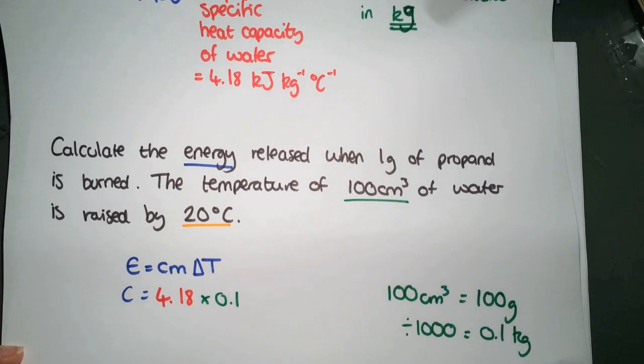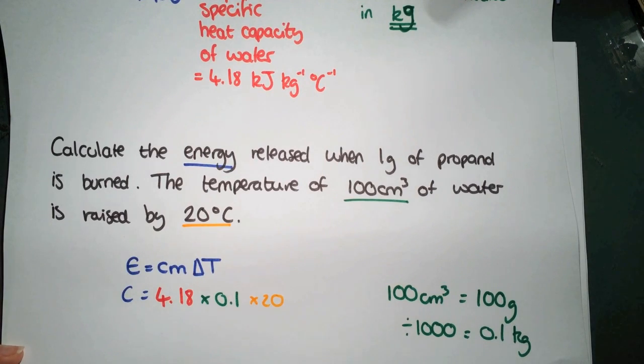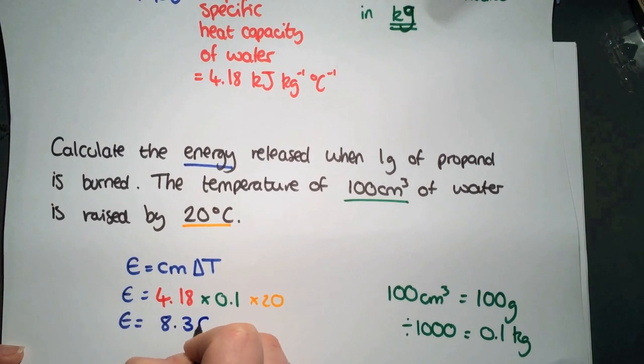Then finally, we have our delta T value, which is 20. All we have to do to work out the energy is multiply the three together. You can use a calculator for that. And you will find that it's 8.36 kilojoules that has been released in this reaction.